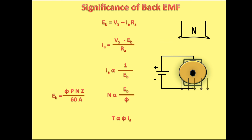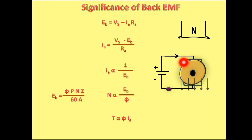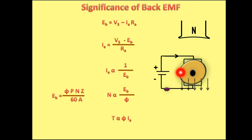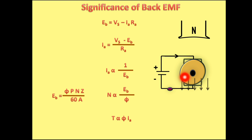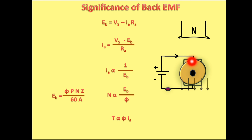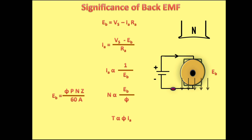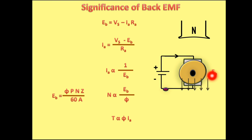First of all, let us know what exactly the meaning of back EMF is. The working principle of a motor is: when a current-carrying conductor is placed in electromagnetic flux, it experiences a mechanical force due to which it rotates. So our armature is placed in the electromagnetic flux and that is why it is rotating — torque is getting developed. When this armature rotates in the electromagnetic flux, there is generator action taking place in the motor, and due to that there is an induced EMF in the armature. This induced EMF is called back EMF, because its direction is exactly opposite to the supply voltage. That is why it is called back EMF or counter EMF.